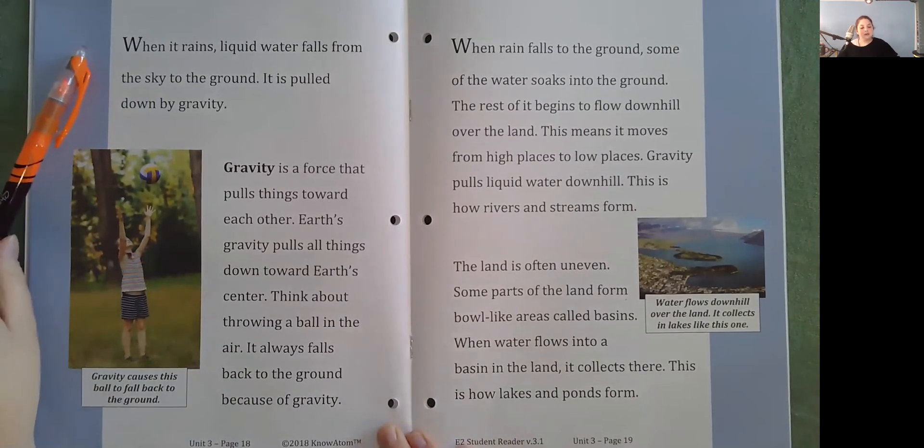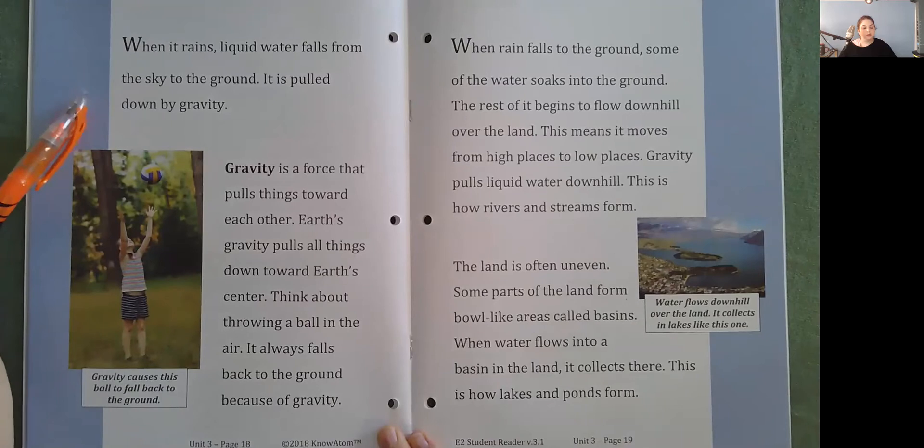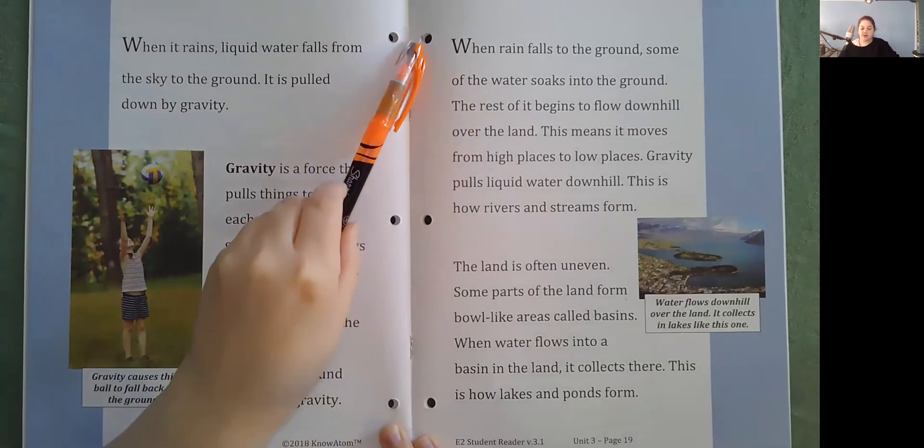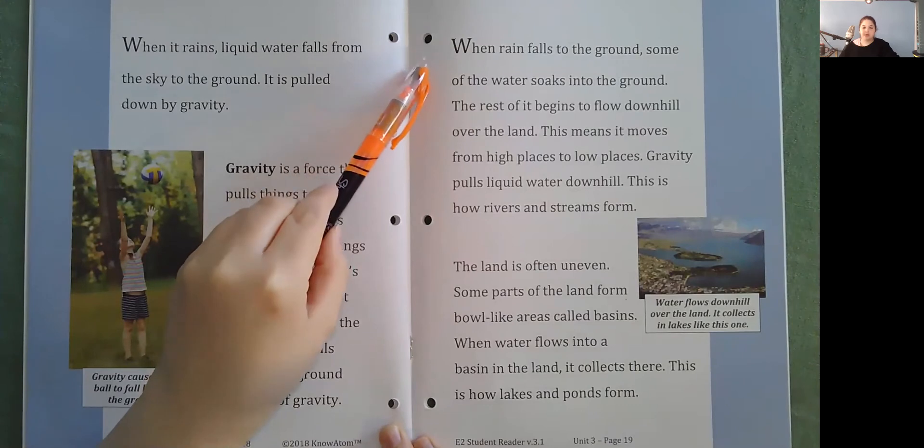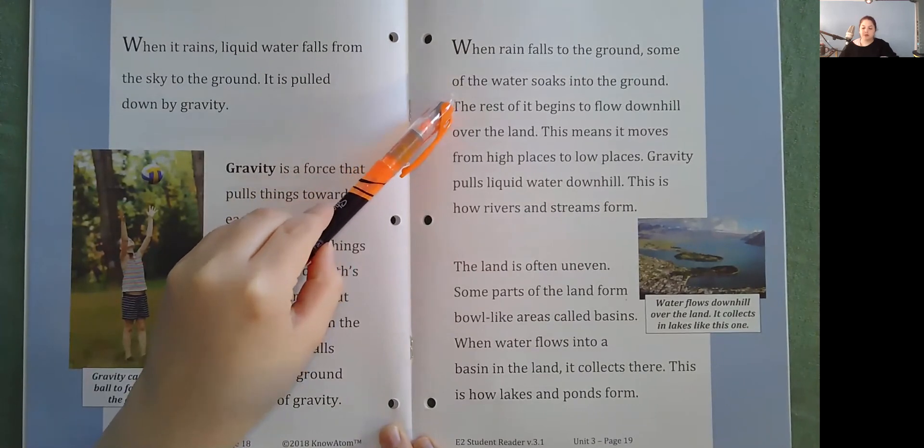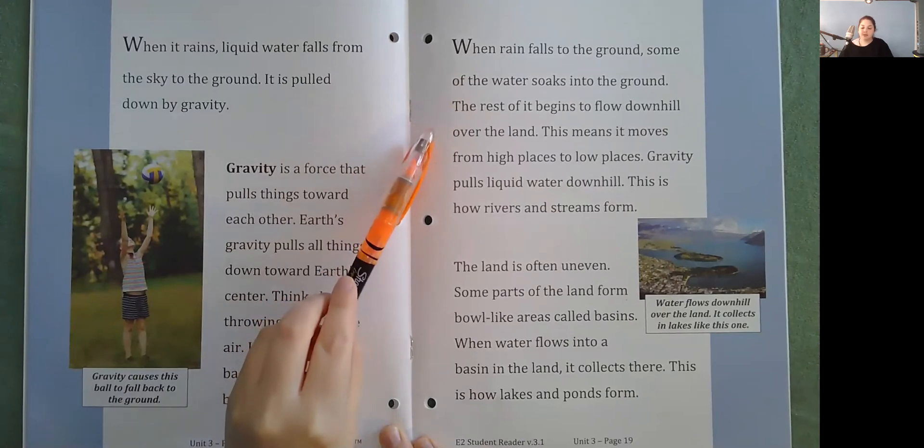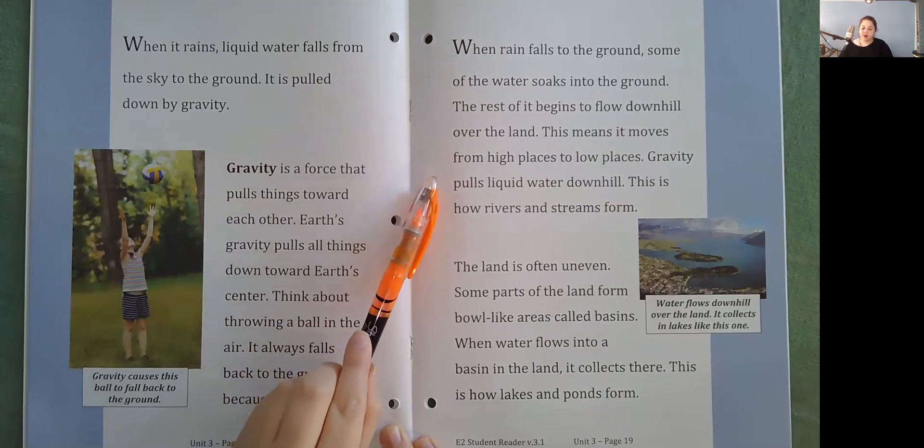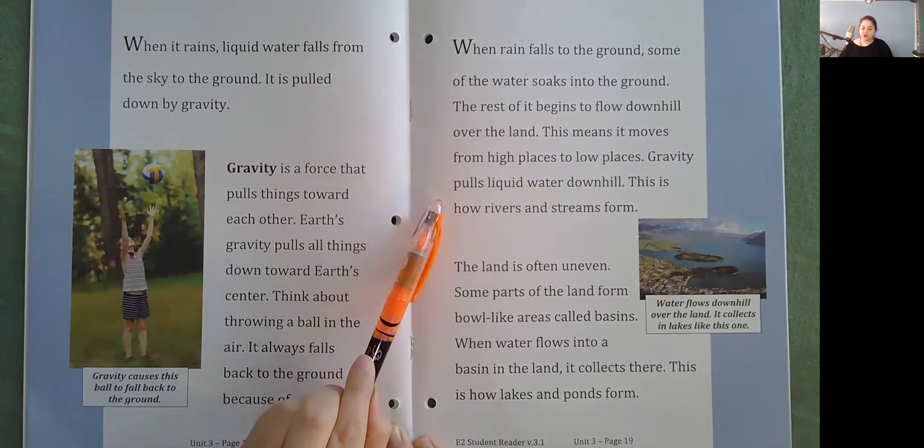When it rains, liquid water falls from the sky to the ground. It is pulled down by gravity. Gravity is a force that pulls things toward each other. Earth's gravity pulls all things down towards Earth's center. Think about throwing a ball in the air. It always falls back to the ground because of gravity. When rain falls to the ground, some of the water soaks into the ground. The rest of it begins to flow downhill over the land. This means it moves from high places to low places. Gravity pulls liquid water downhill. This is how rivers and streams form.